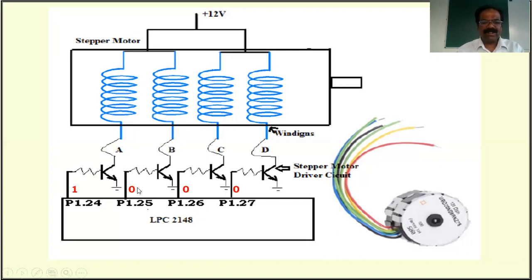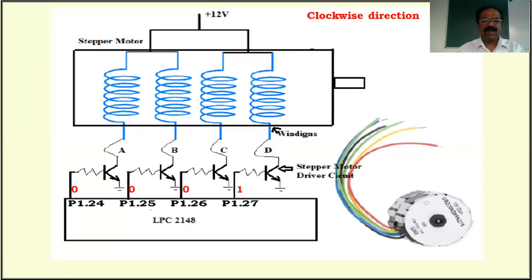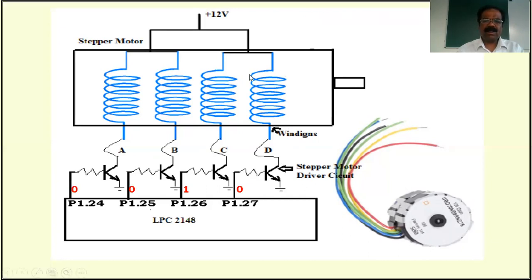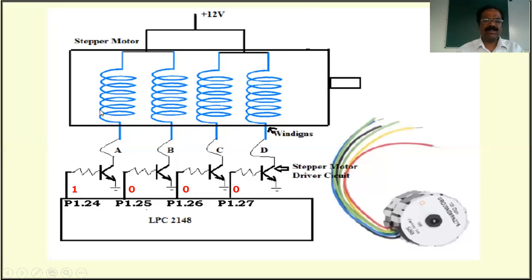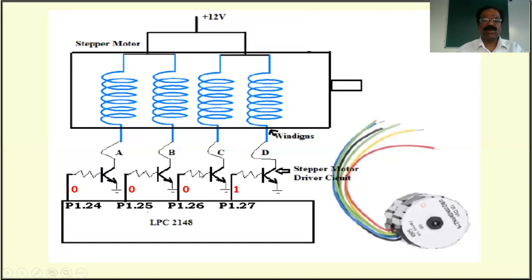If you want to rotate the motor in a clockwise direction, first we have to activate winding D — P1.27 is made high, and the others are low. The circuit is closed, current starts flowing through this winding, and it creates a torque, rotating the motor by 1.8 degrees. Then provide delay and energize winding C, then B, then A — this reverse sequence is for clockwise direction.